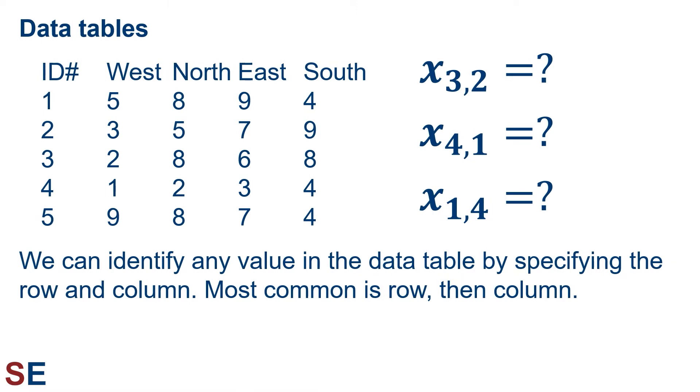Let's quickly look at 3 other examples of this. x 3 comma 2, x 4 comma 1, and x 1 comma 4. For x 3 comma 2, we would go down 3 rows and over 2 columns to the number 8. For x 4 comma 1, we would go down 4 rows and over 1 column to the number 1. For x 1 comma 4, we would go down 1 row and over 4 columns to the number 4.